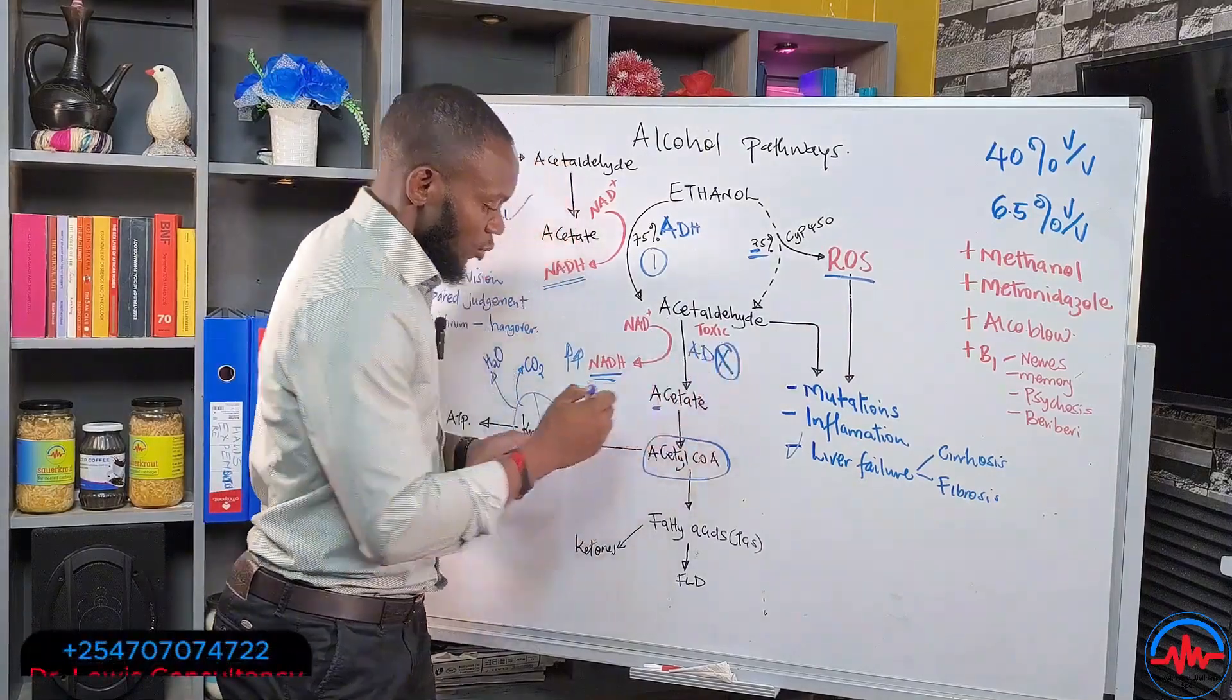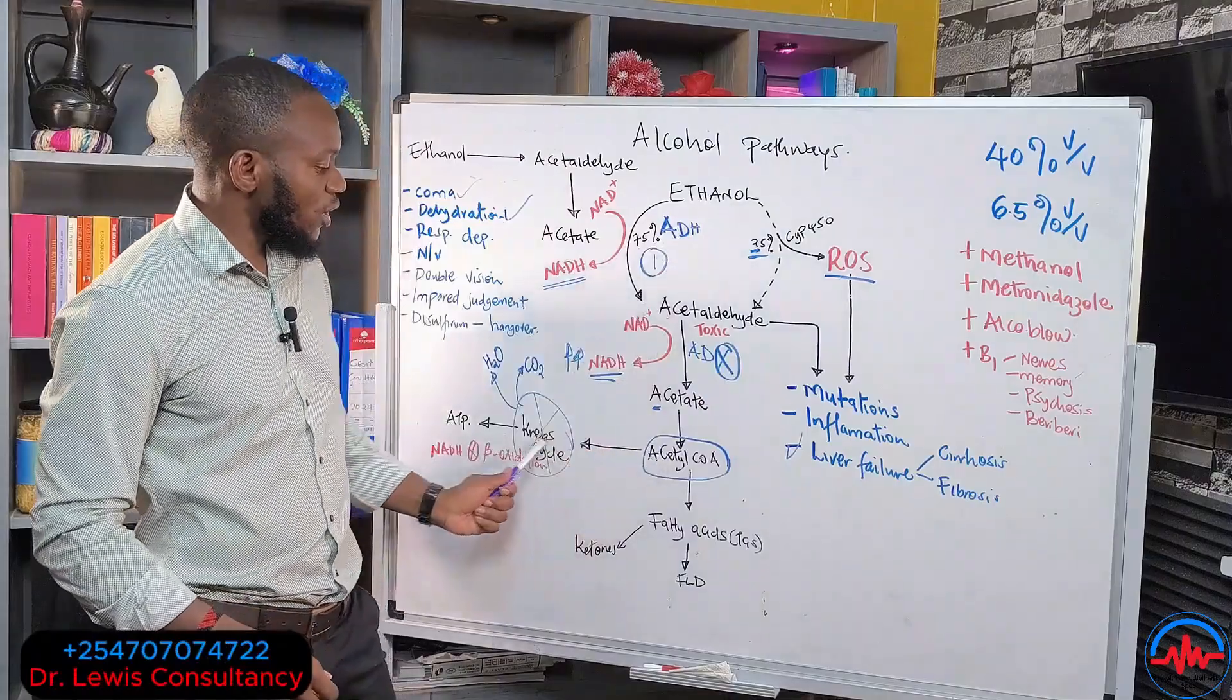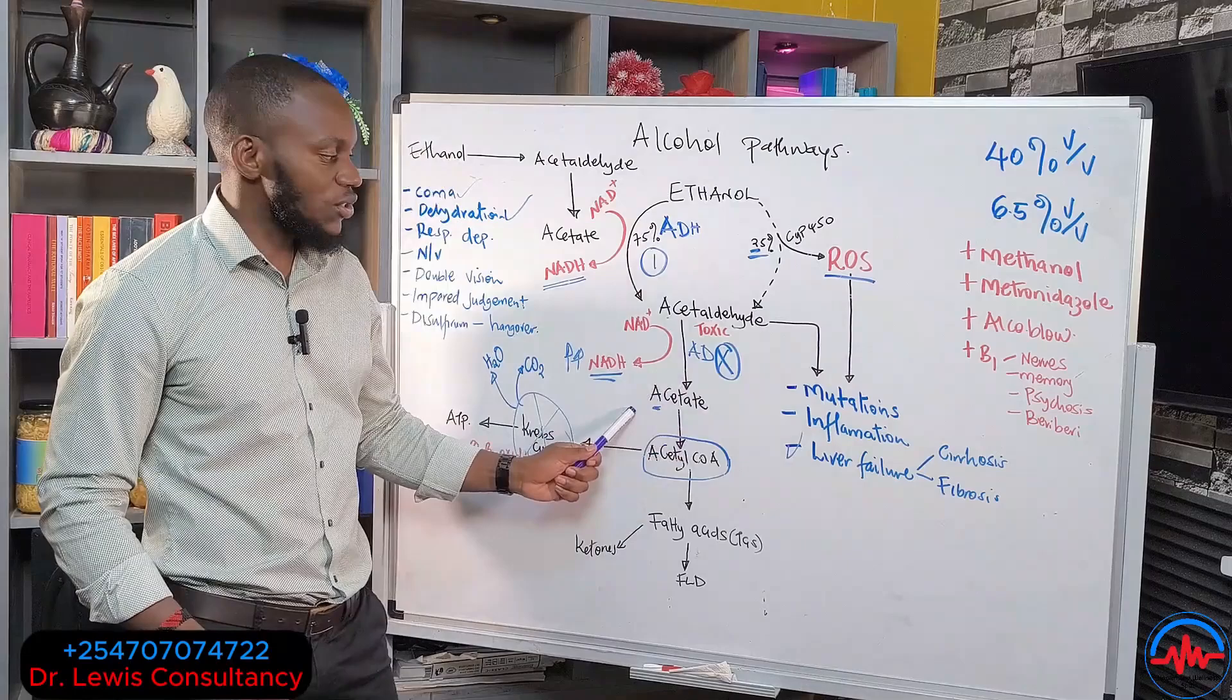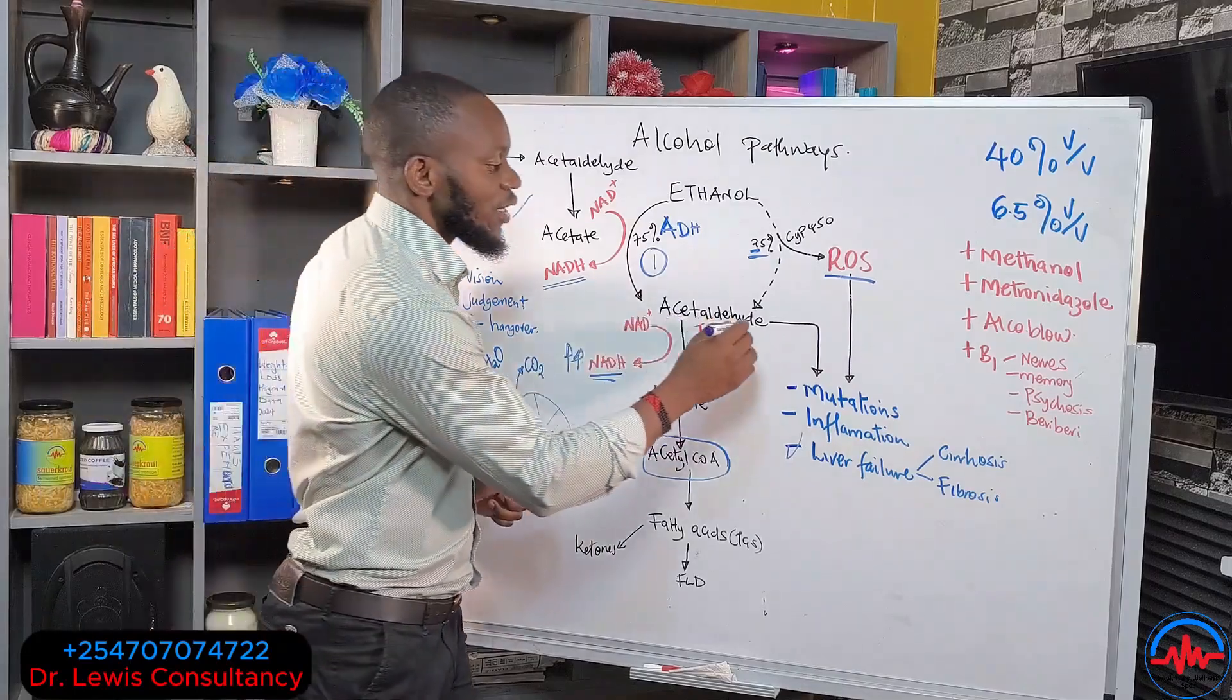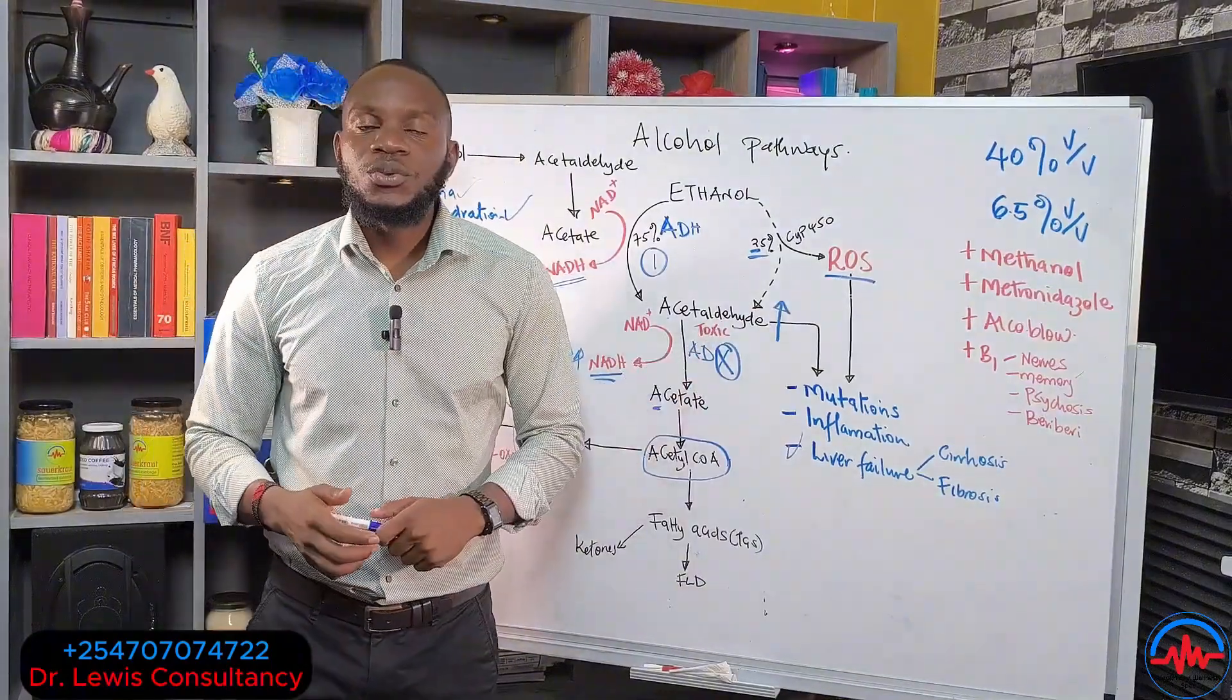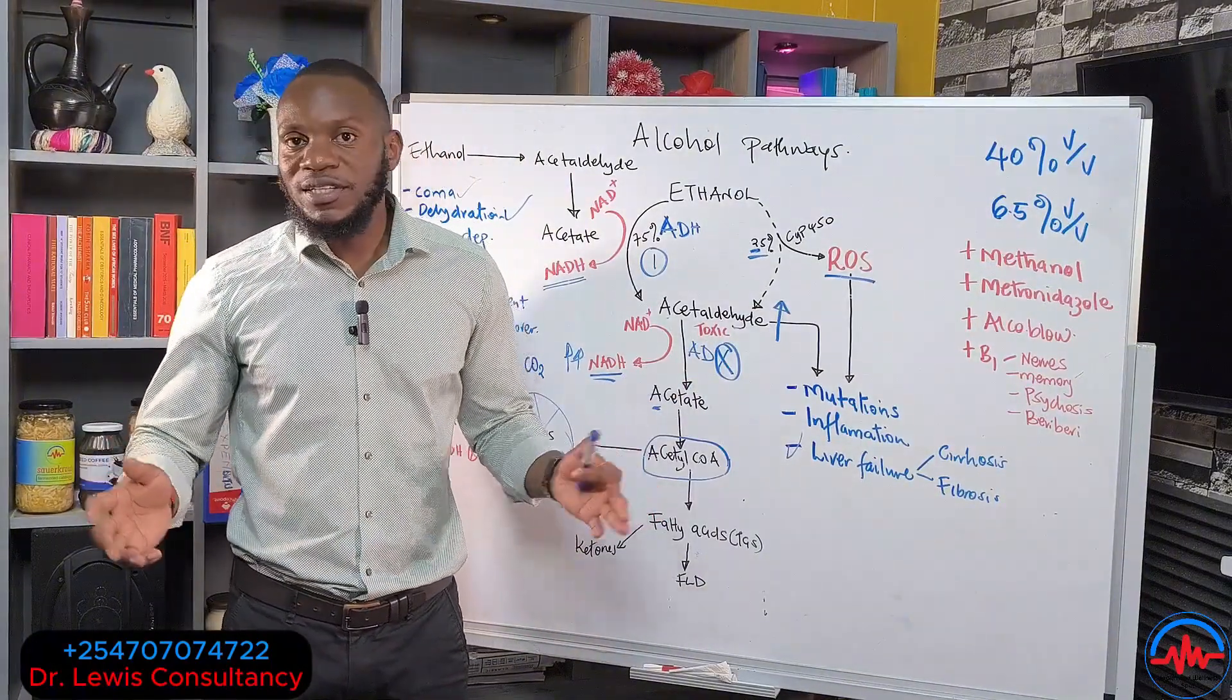Once it blocks this pathway, we are not going to convert our alcohol into water and CO2 or ATP, or even into acetate, which is the least toxic in the system. Therefore, we will start accumulating acetaldehyde in the system. Once you accumulate acetaldehyde in the system, what will happen to you?